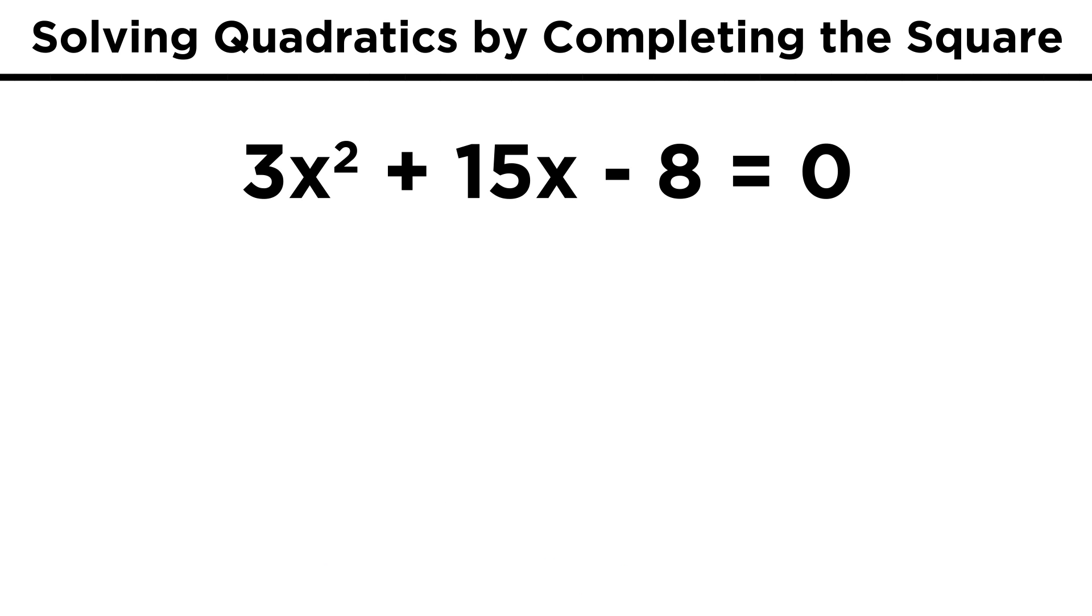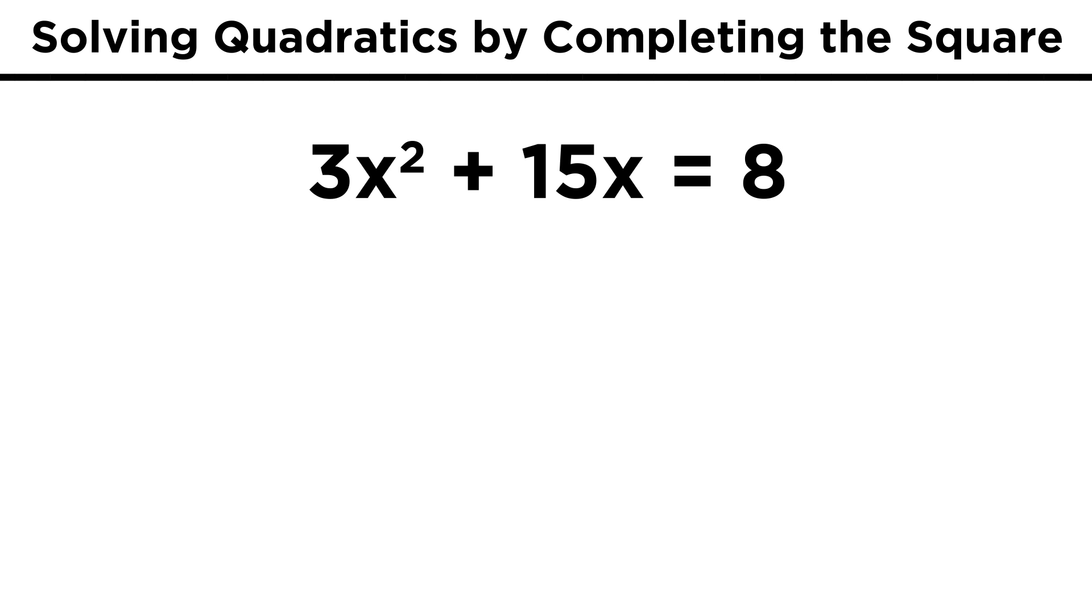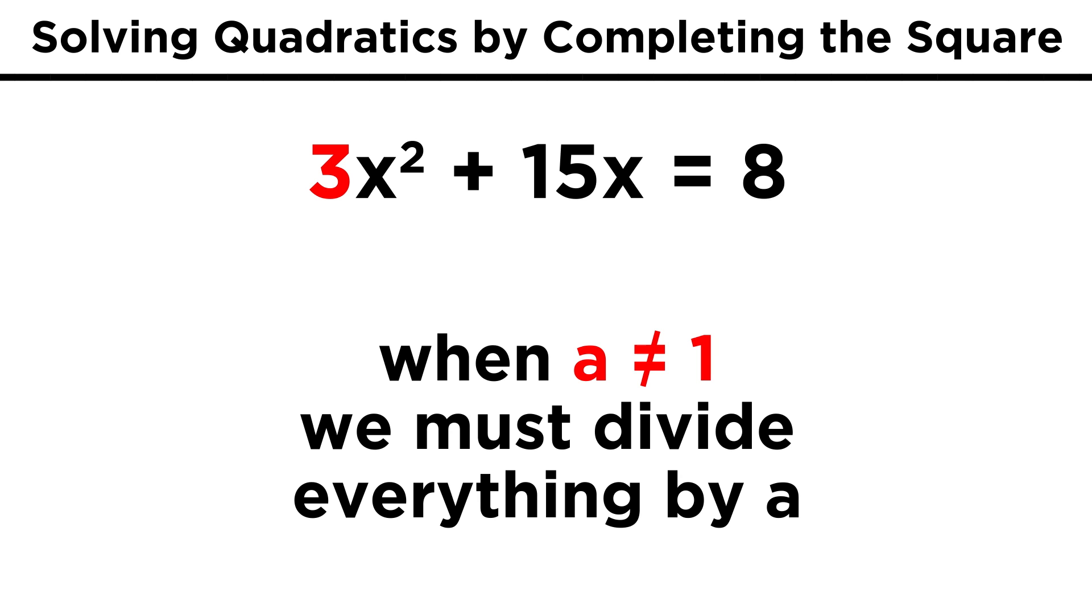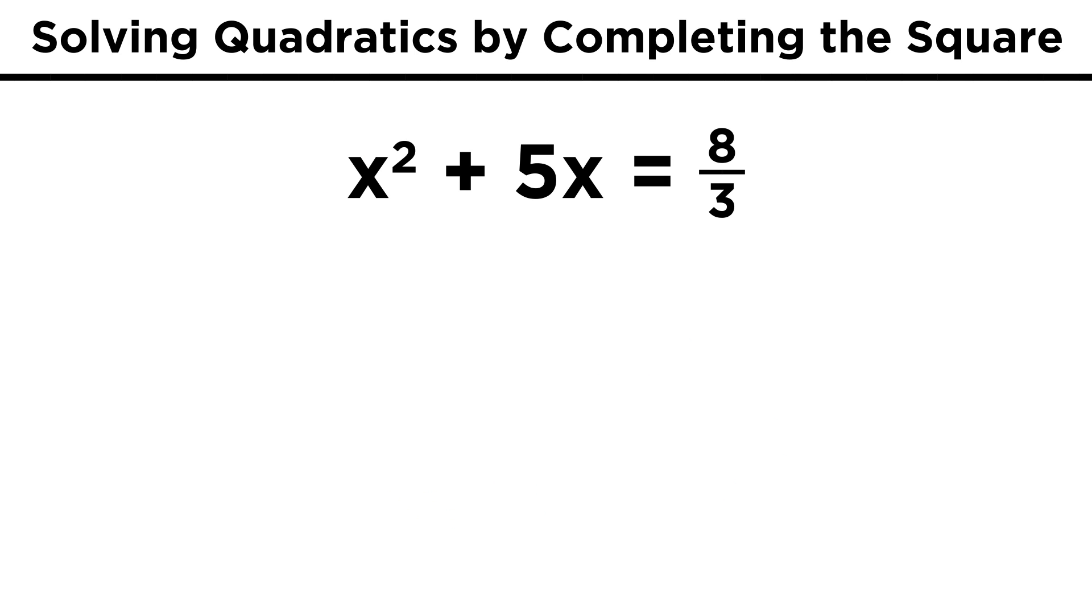Let's do just one more. 3x squared plus 15x minus 8 equals zero. Once again we bring 8 to the other side, but now we have something trickier on the left. The best thing to do when there is a coefficient on the x squared term is to divide everything by that coefficient. You may end up with fractions, but this is definitely the easiest way to go, even if that's the case. So let's divide everything by 3. We will get x squared plus 5x equals 8 thirds.